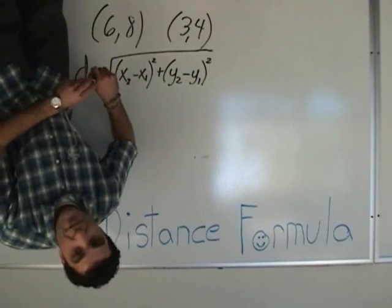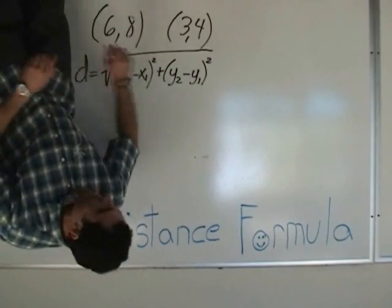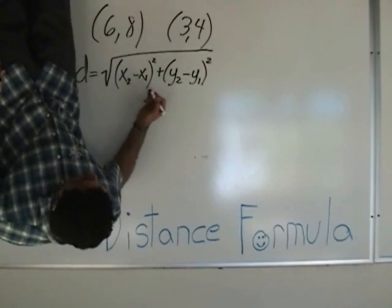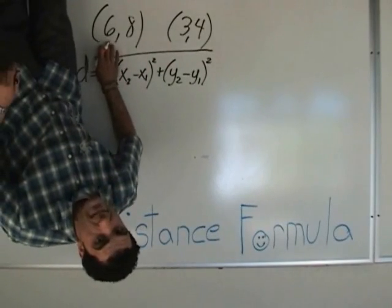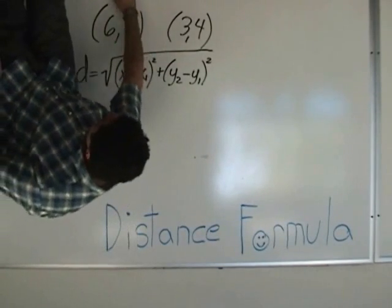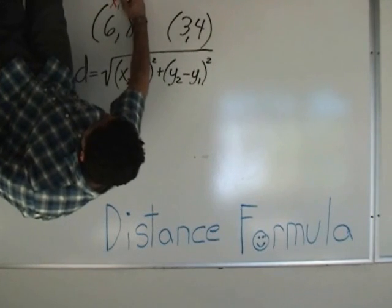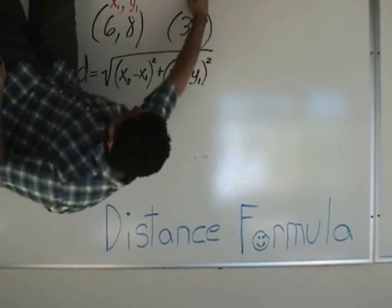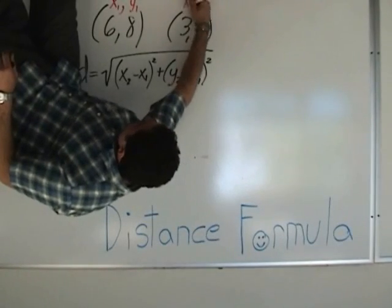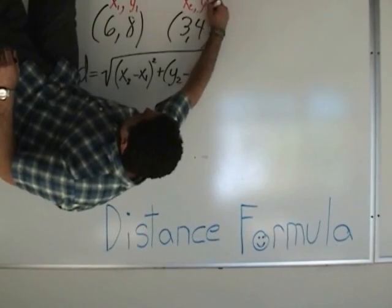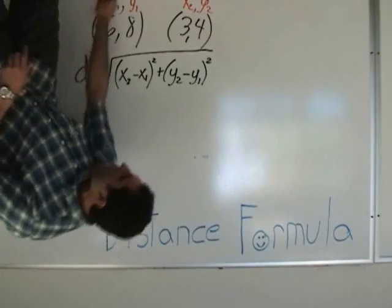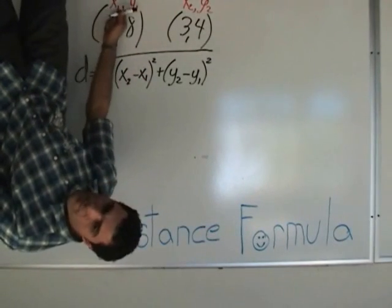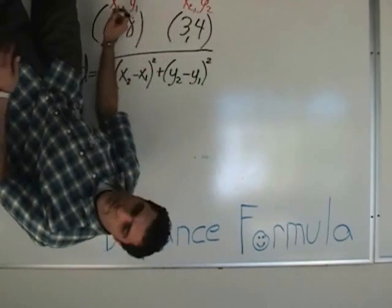Let's give a little information. x2 minus x1 — if you think of a point as (x, y), we can call the first point x1, y1, and the second point x2, y2.